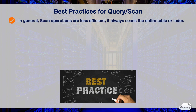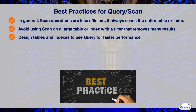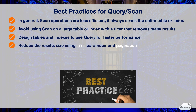In general, scan operations are less efficient than other operations in DynamoDB, as they always scan the entire table or secondary index. Filtering scanned results requires extra steps of removing data from the result set. You should avoid using scan on a large table or index with a filter that removes many results. For better performance, you should design your table and indexes so that you can efficiently use query instead of scan. You can also reduce the result size by setting the limit parameter and implementing pagination.